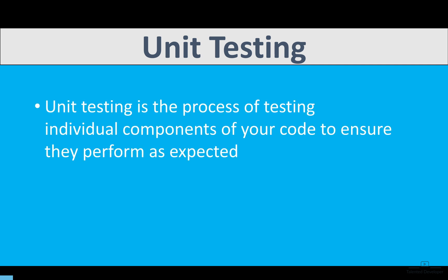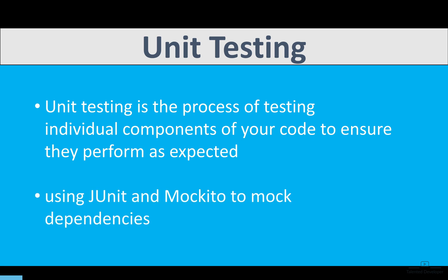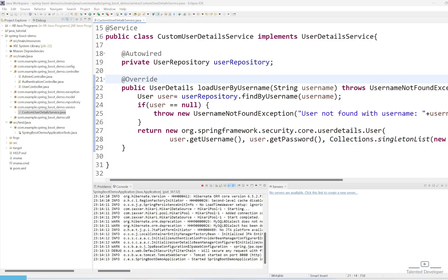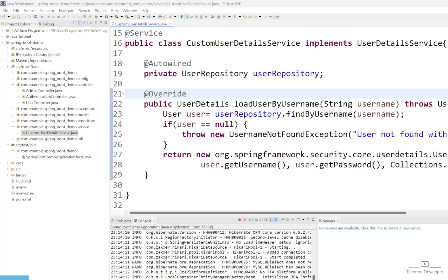So, what is unit testing? Unit testing is the process of testing individual components of your code to ensure they perform as expected. In a Spring Boot application, unit tests are usually written using JUnit and Mockito to mock dependencies. Today, we will be focusing on testing our CustomUserDetailService class, which is responsible for loading the user by username.